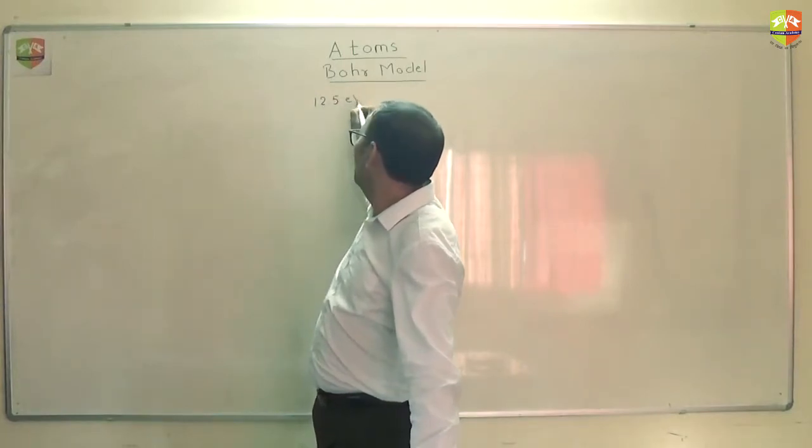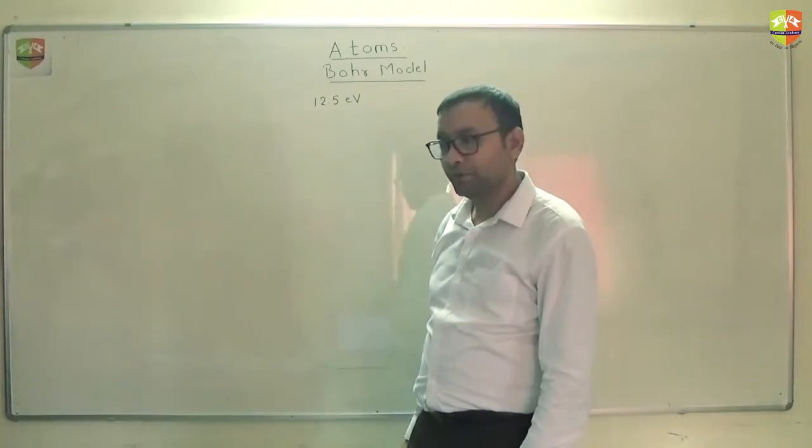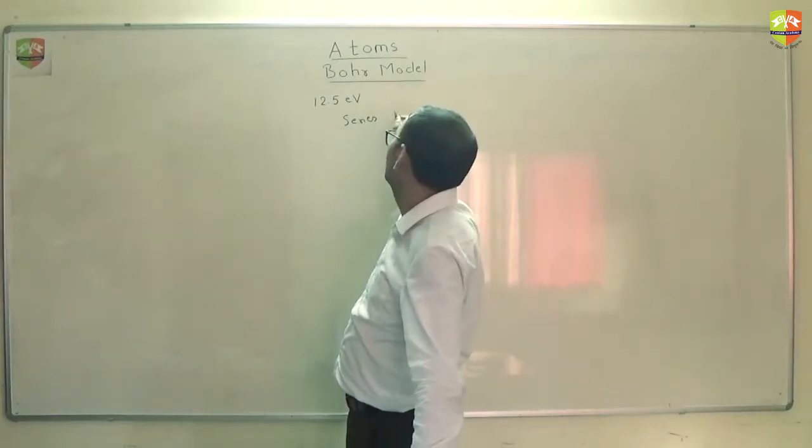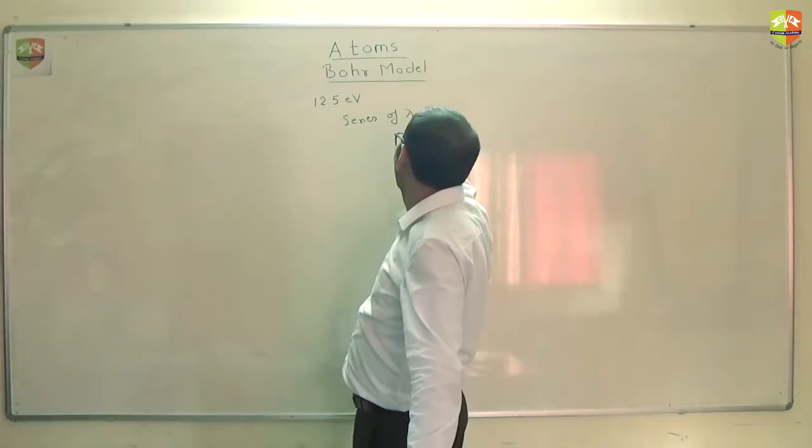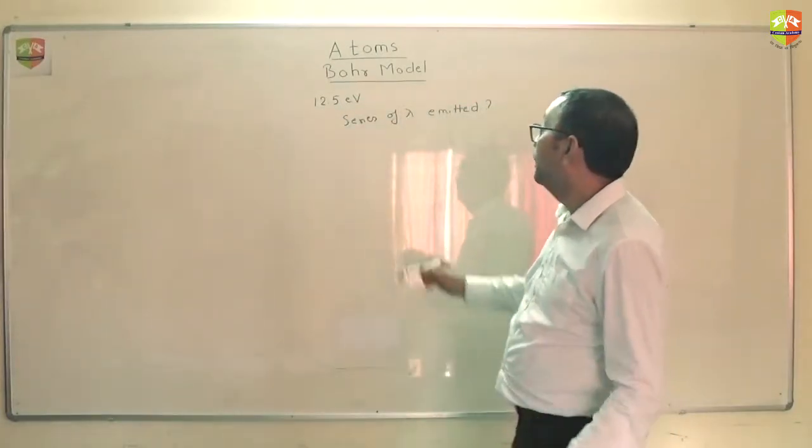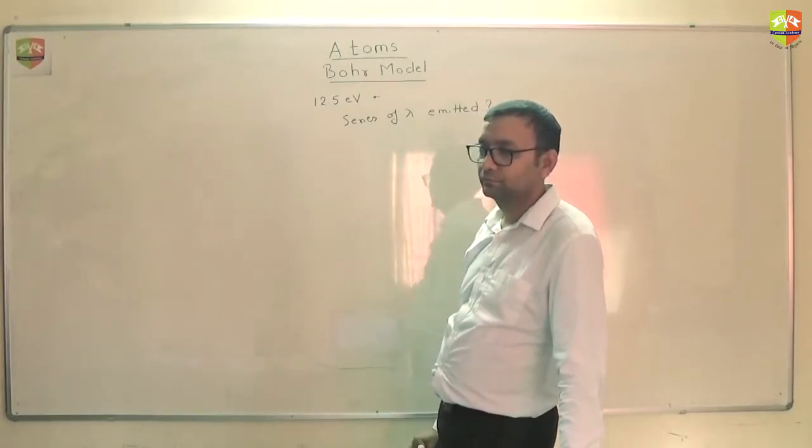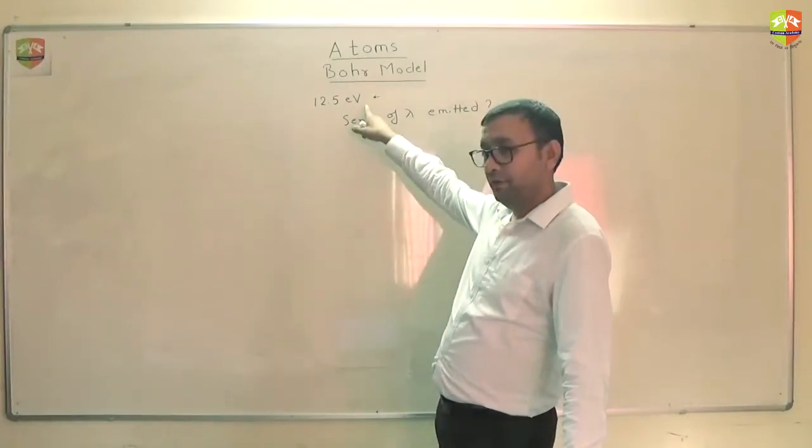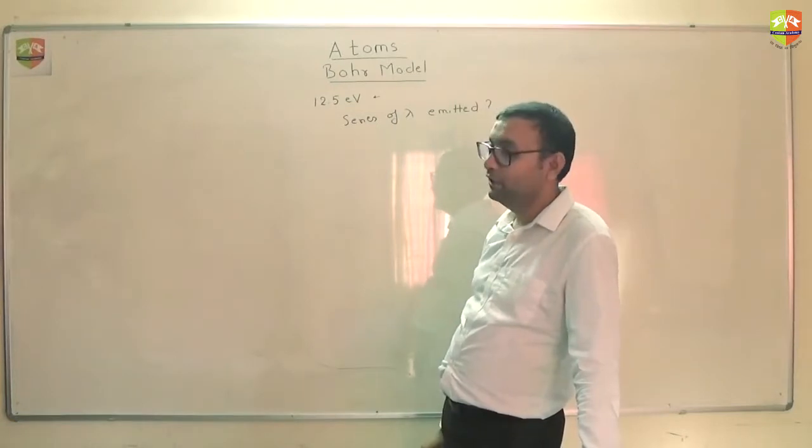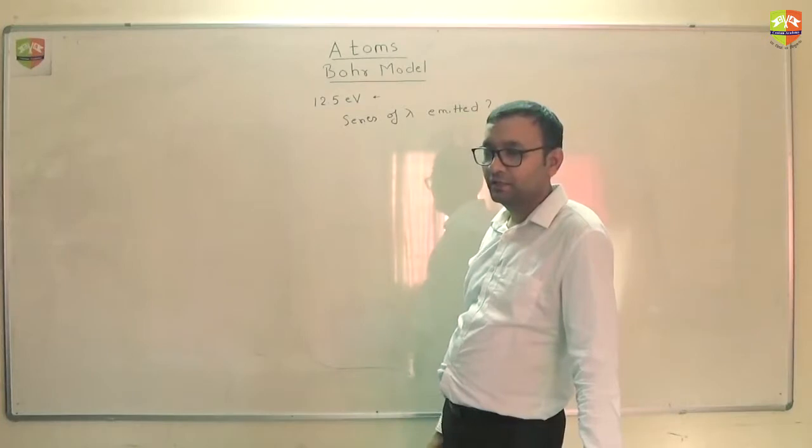12.5 electron volt. This much electron beam is used to bombard hydrogen at room temperature. What series of wavelengths will be emitted? You need to tell me series. Which series? You need to use E equal to energy. Where this will go? After absorbing this much, which level it will go to? How will you find? We have to first find out which level it will go to. After absorbing this much, electron will not be in its ground state. It will jump to the other states where it will go. So find that first.